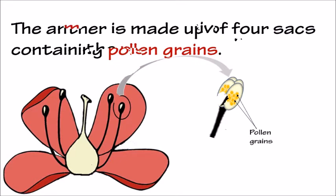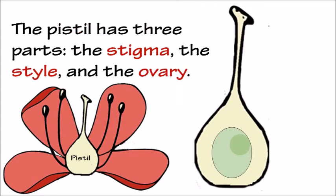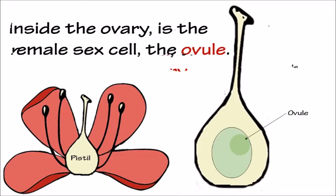The female reproductive organ is the pistil. The pistil has three parts: the stigma, the style, and the ovary. Inside the ovary is the female sex cell, the ovule.